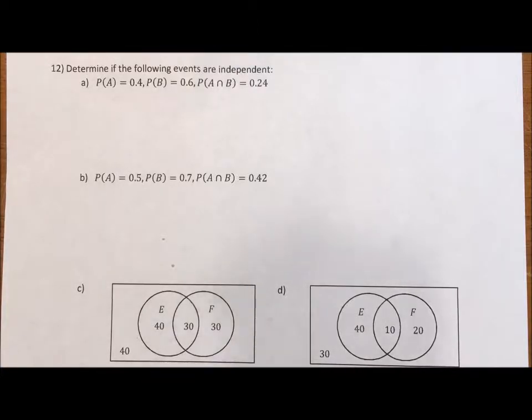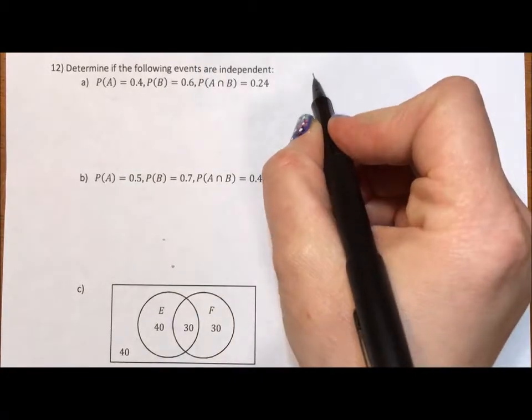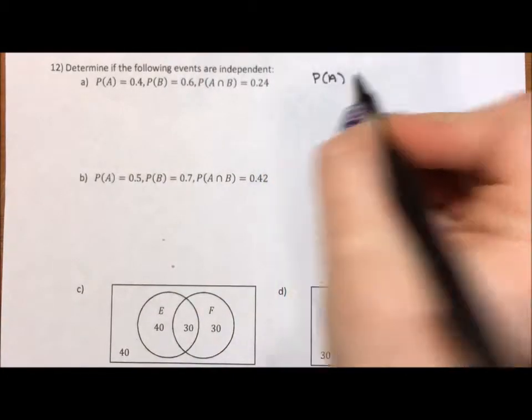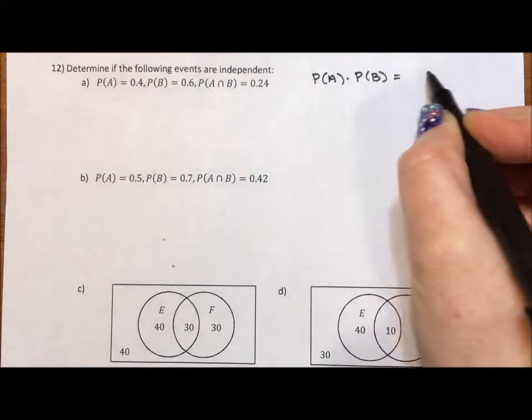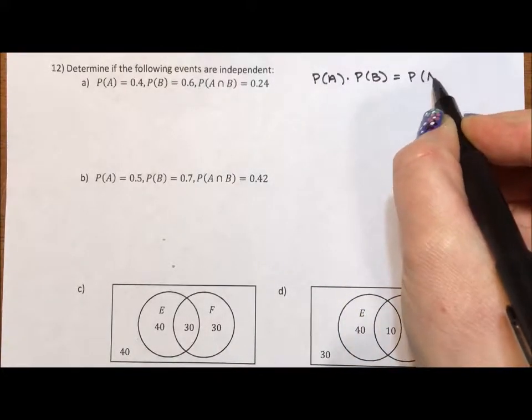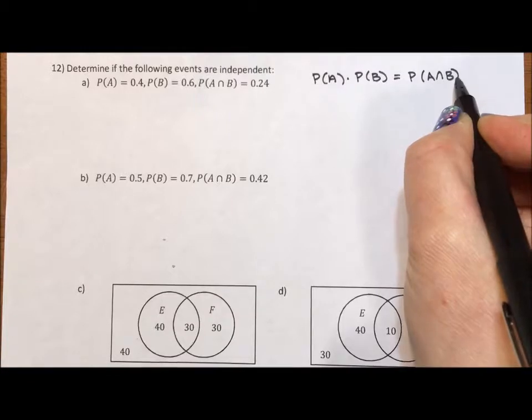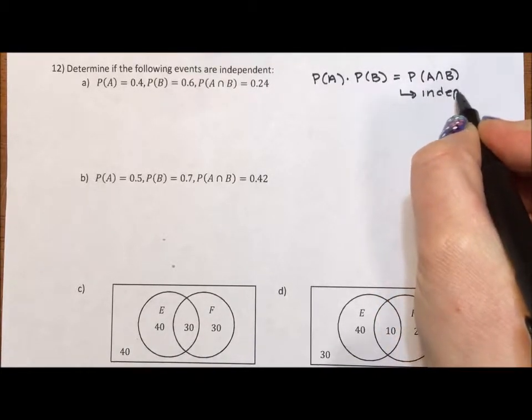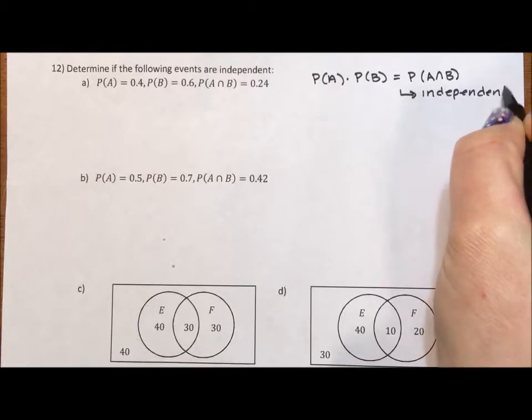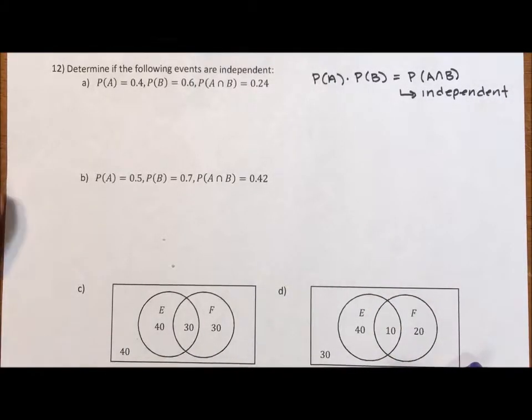So the way we test for independence is the probability of one event times the probability of the other event. If it equals the probability of the intersection of the two events, then it is independent. If that calculation doesn't work, then it is dependent.